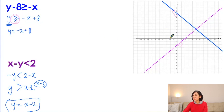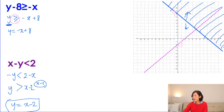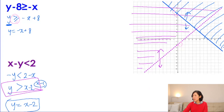Now shade the region. Look at your inequality symbol. For the first inequality, y is greater than the line, so shade the region above the line. For the second inequality, y is also greater than the line — so again shade upward, above the line. Can you see the common region? This small overlapping region is the answer for both inequalities. All values inside that region are true for both the first and second inequality.